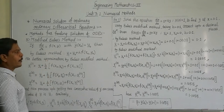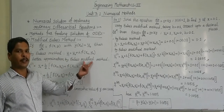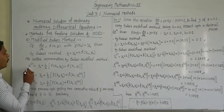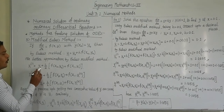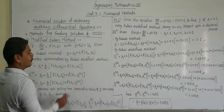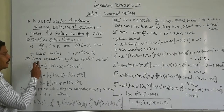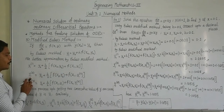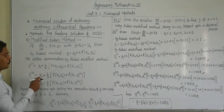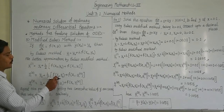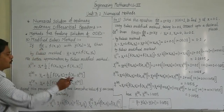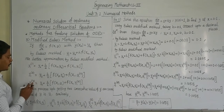For better approximation, we apply the modified method to this differential equation. Euler's modified method gives y1 raised to 1 equal to y0 plus h upon 2 into the quantity f of x0 comma y0 plus f of x1 comma y0. This is the first iteration by Euler's modified method. Then the second iteration gives y1 raised to 2, equal to y0 plus h upon 2 into bracket f of x0 comma y0 plus f of x1 comma y1 raised to 1, replacing y1 with the value obtained in the previous step.